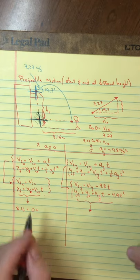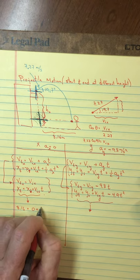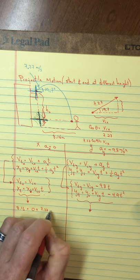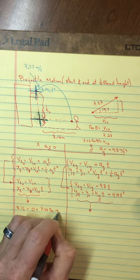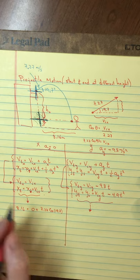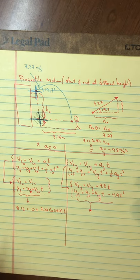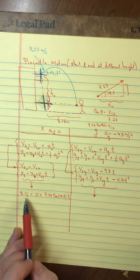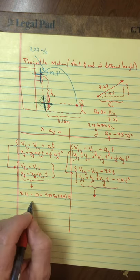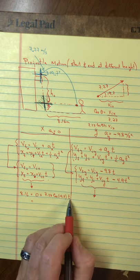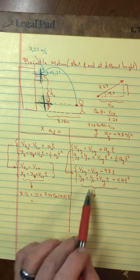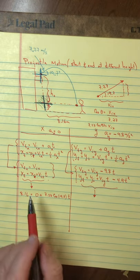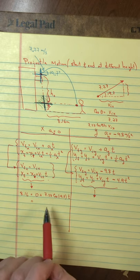So that's what I'm going to put over here: 7.27 times cosine of 19.7, then multiplied by time. I like what I see here — I have an equation with only one unknown, and that has time in it. I could actually solve this one. I was thinking I might get coupled equations with two equations and two unknowns, but this is even easier: one equation with one unknown.